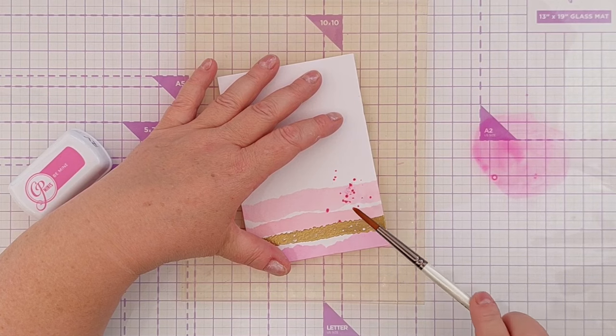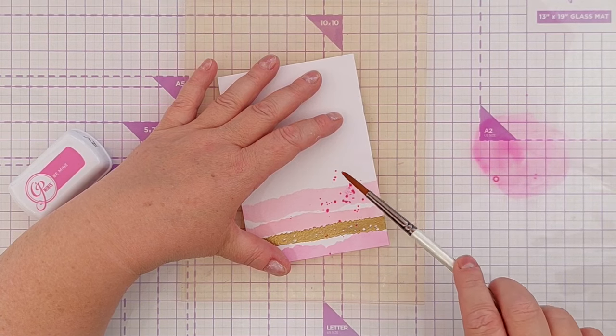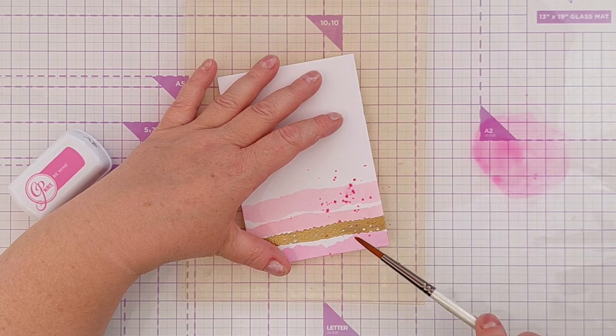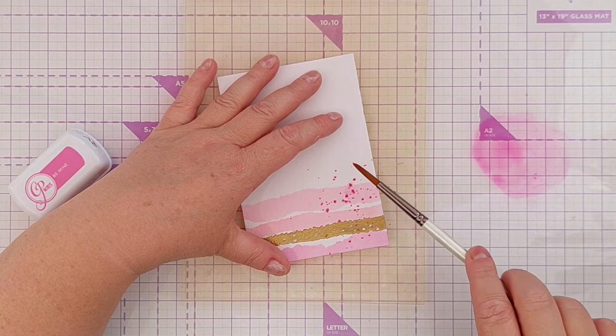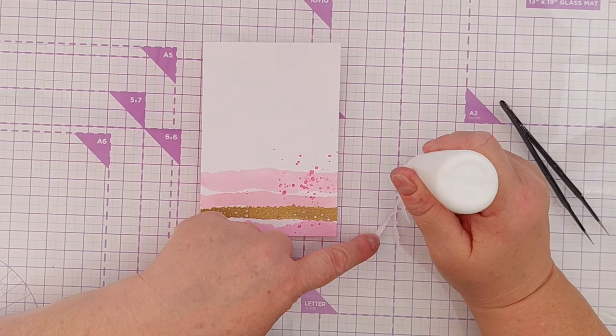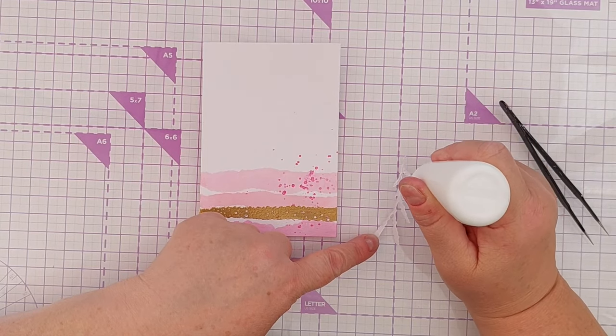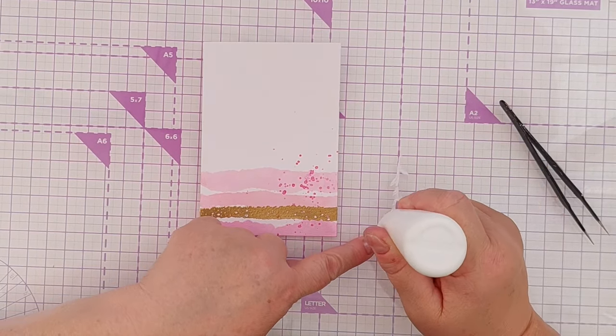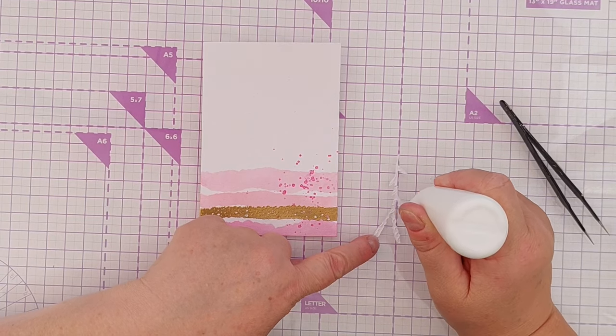Somewhere along the line I managed to get an inky fingerprint on one of my strips towards the right hand side of the card. So instead of starting again, I decided to embrace it and I spattered on some—I think it was 'Be Mine'—that I diluted with a bit of water so that it looked like part of the design.